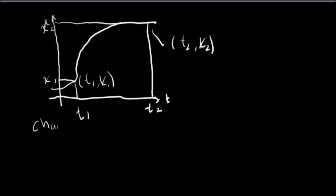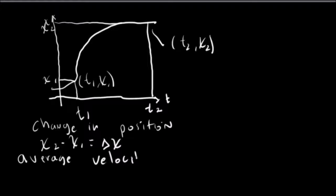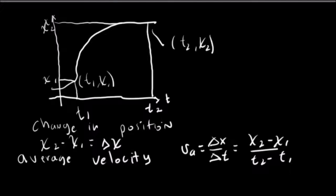So now our change in position for our displacement is x2 minus x1, which is equal to delta x. So that's our moving in the x direction. Now our average velocity we're going to define as the change in x, delta x, over delta t. That's what that delta symbol means, just the change in. So that's going to be x2 minus x1 divided by t2 minus t1. So that tells us what our average velocity is over that period of time.